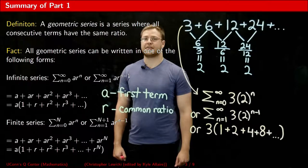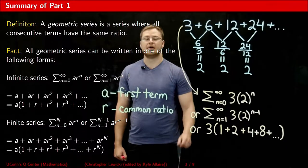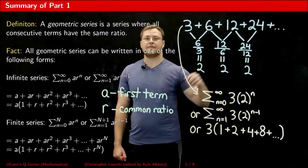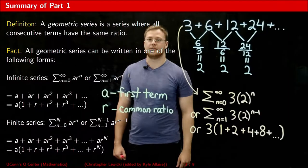First off, a geometric series is a series where the consecutive terms have the same ratio. In this example here, if I took the ratio of any two consecutive terms, notice that I always get the same number, two.